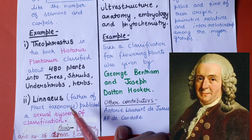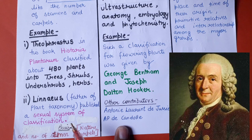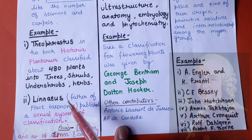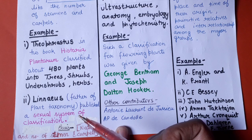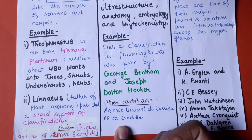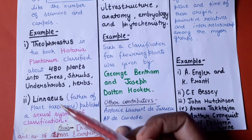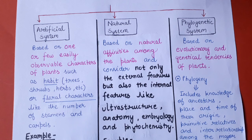Then Linnaeus, whom we call the Father of Plant Taxonomy, gave a classification known as the Sexual System of Classification, in which plants were classified based on stamens and carpels. We will discuss this classification in more detail in a separate video. In the artificial system, they basically took characteristics that can be easily observed and identified — one or two easily observable characteristics are used to classify plants.